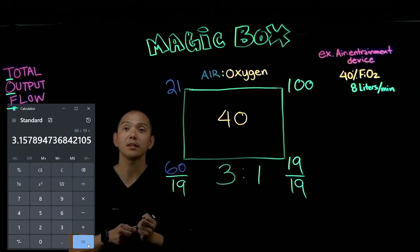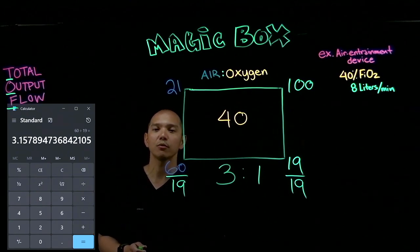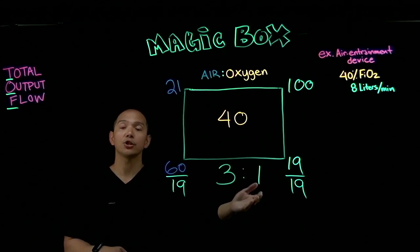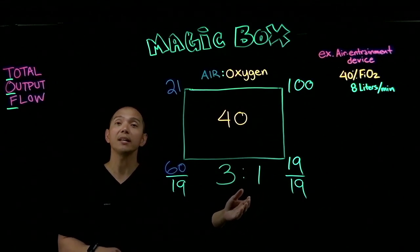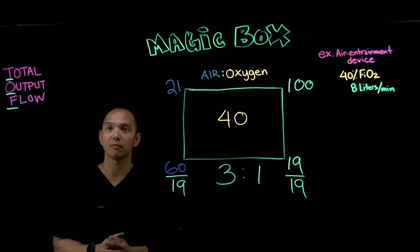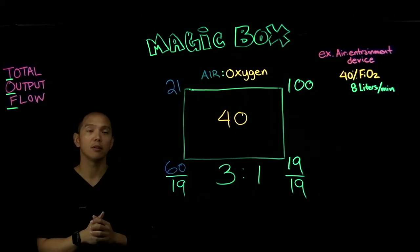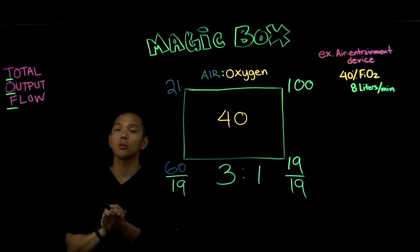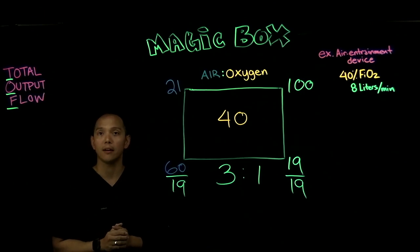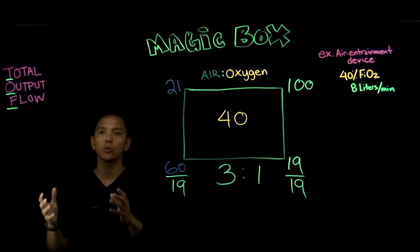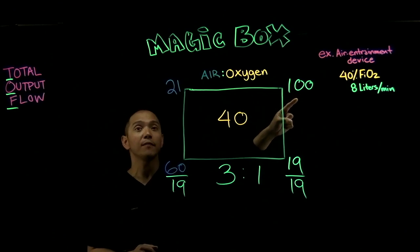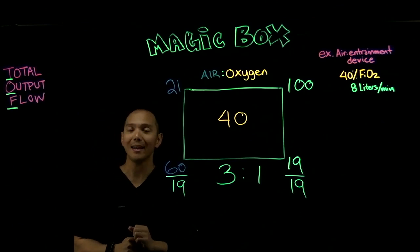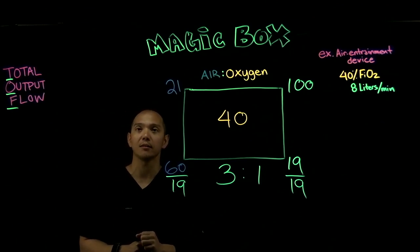This is the air-to-oxygen ratio: for every one part of oxygen, we are entraining three parts of room air — a 3:1 ratio. Now we're going to talk about the total output flow, or TOF — the total output flow from this air entrainment device set at 40% FiO2 with the flow meter dialed to 8 liters per minute.